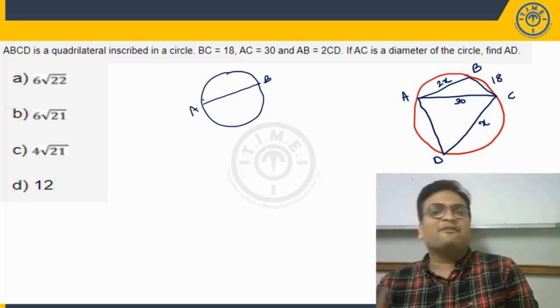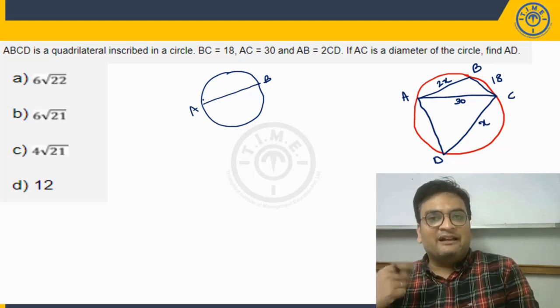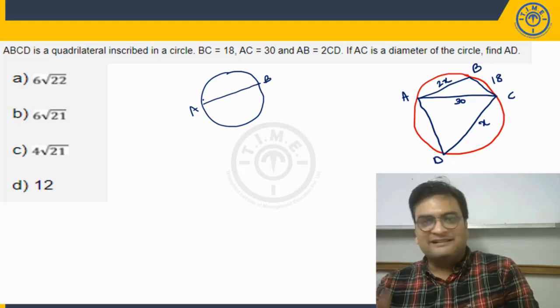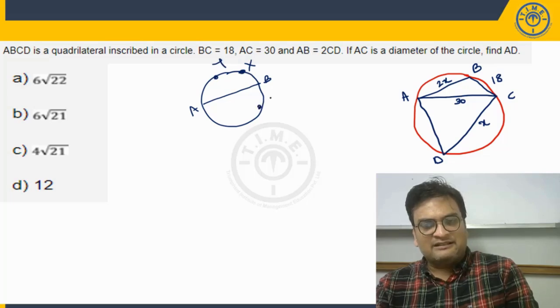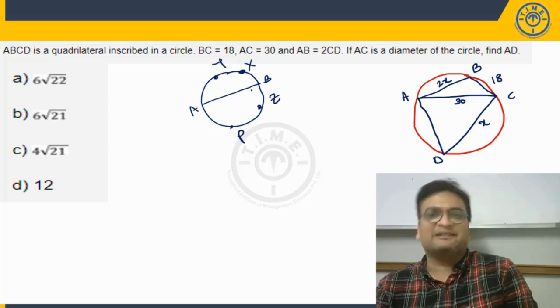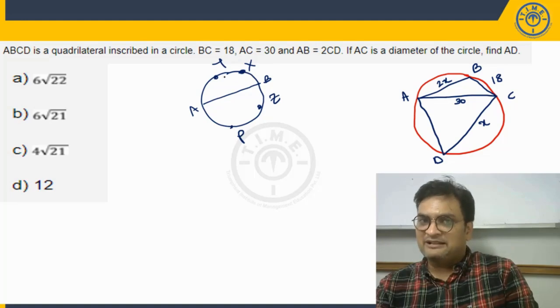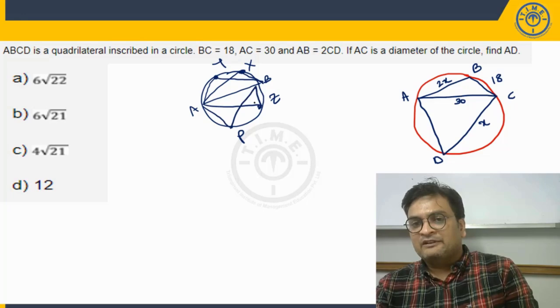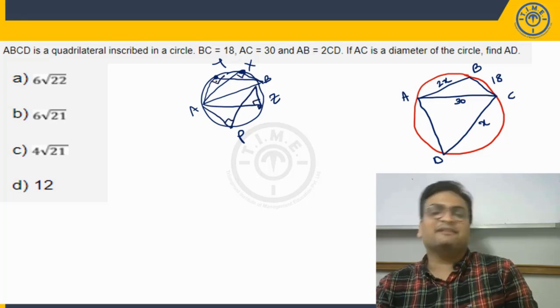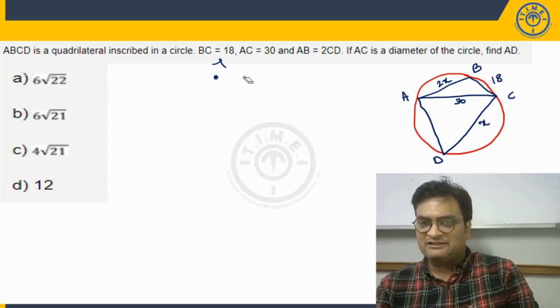Now one more thing is, if AC is diameter, then we have a property in circles, which is angle formed in a semicircle is always 90 degrees, is always right angle. So that means if I take any point here, say point X, point Y, point Z, point D, any point right here, if I connect these points, individual points with both A and C, I will get angles like this. Each of this angle is right angle, 90 degrees.